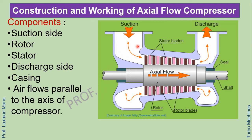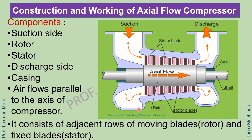In case of axial flow compressor, air flows parallel to the axis of the compressor — that is why it is called axial flow. It consists of adjacent rows of moving blades called rotor blades and fixed blades called stator blades. The rotor blades are attached to the shaft as rotating blades, while the stator blades are fixed to the casing as a fixed part.